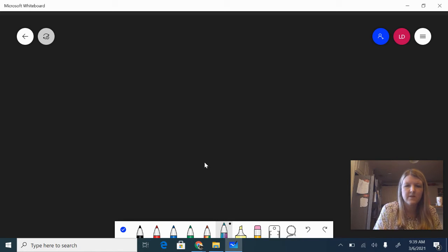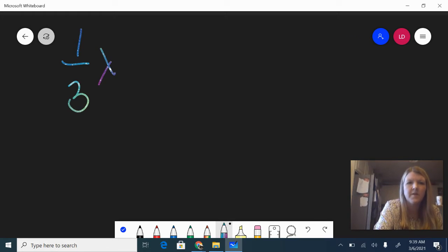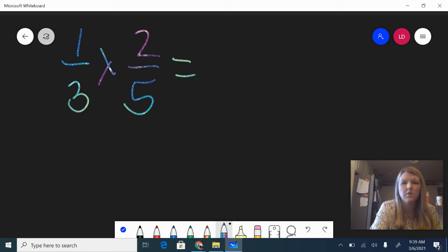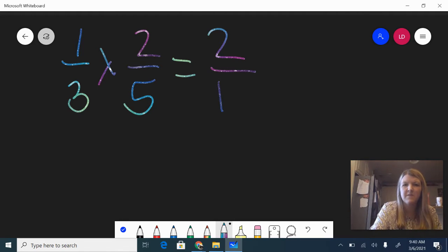The first one we're going to do is one-third times two-fifths. I'm going to multiply the numerators. Remember, that's my procedure for multiplying with fractions: multiply the numerators and multiply the denominators. So one times two gives me two, three times five gives me fifteen. My answer is two-fifteenths.